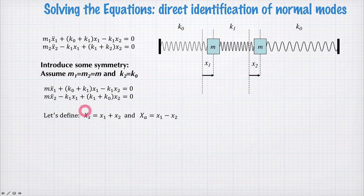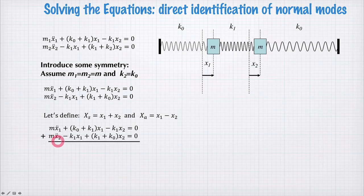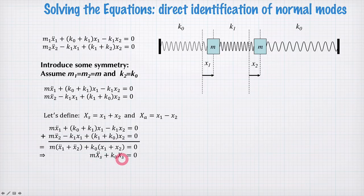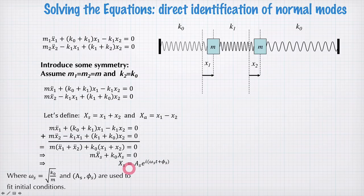Let's define two new variables: capital Xs, which is the sum of x1 and x2, and capital Xa, which is the difference between x1 and x2. We're going to add these two equations together. What we get is that mass times the sum of the accelerations plus k0 times the sum of x1 and x2 equals zero — the k1 terms cancel. Using the definition of Xs, we can write down an equation that looks like simple harmonic motion, as we first encountered it for a single mass. So Xs equals some amplitude As times e to the i(omega_s * t + phi_s). The definitions of omega_s and the free parameters A and phi are used to fit initial conditions — initial position and initial velocity.